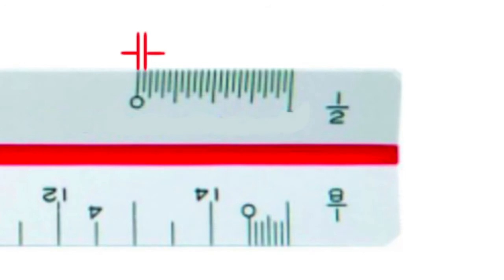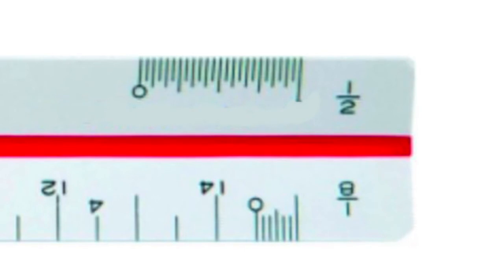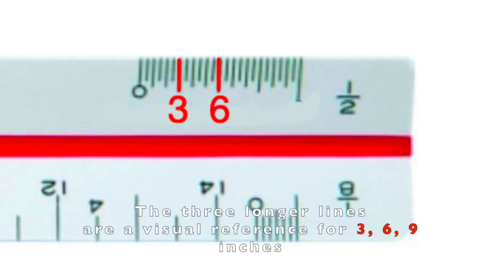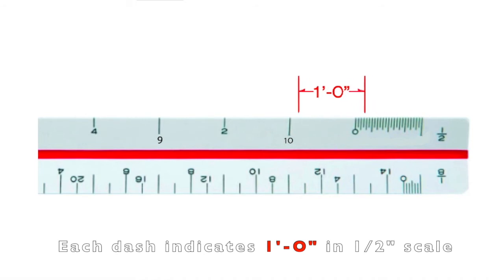On the half-inch, locate the zero. On the right side of zero, it measures inches. The left side of zero will measure the feet. Let's take a closer look at the inches. There are twelve inches in one foot. The first dash indicates a half-inch. This area right here. Every other line is one inch, from one all the way to twelve. There are longer lines which indicate a visual reference for three, six, and nine inches. So this area here is one foot, and every dash is one foot in half-inch scale.